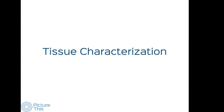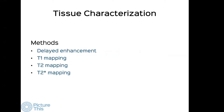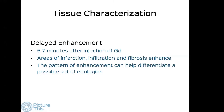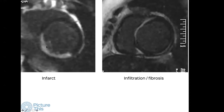The third thing cardiac MR does is tissue characterization. We have special sequences to look at different properties of the myocardium. One is delayed enhancement, also called late gadolinium enhancement (LGE). After injecting gadolinium — a contrast medium like iodine — about seven to ten minutes later, any area of infarction, infiltration, or fibrosis will enhance. An infarct would be subendocardial or transmural, whereas infiltration or fibrosis is typically mid-myocardial, epicardial, or transmural.